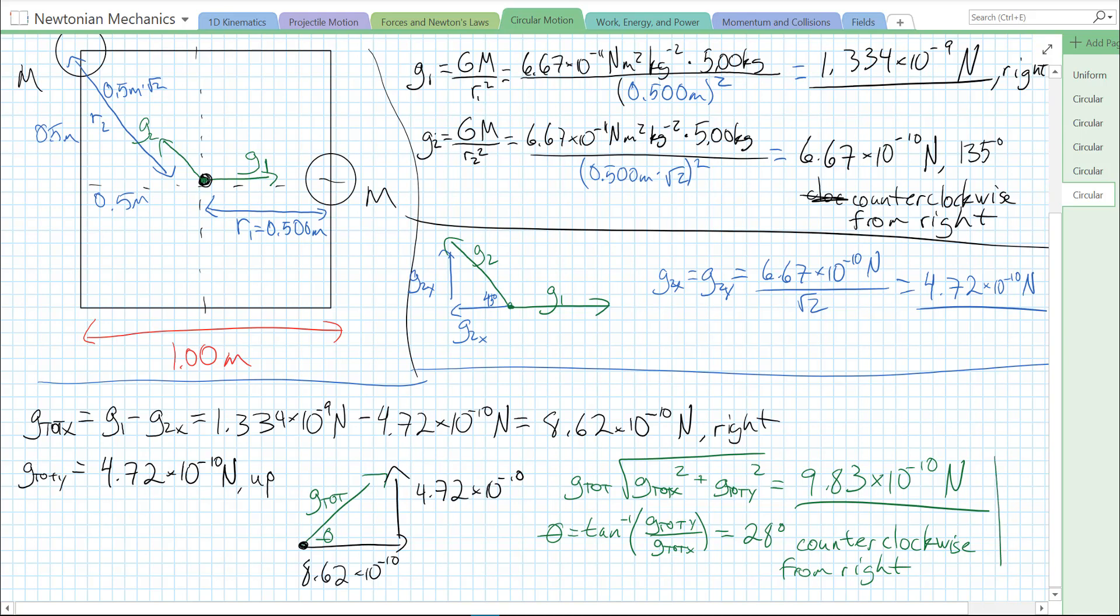So there's the magnitude and direction of our net gravitational field caused by two different masses. We have to find the individual gravitational field vectors from each mass. And we have to add the vectors to find the resultant. That's all. Hope that was helpful. Bye.